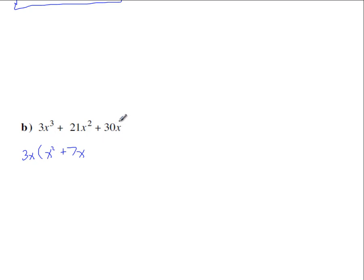And then 30x divided by 3x. 30 divided by 3 is 10. And x divided by x is just 1.